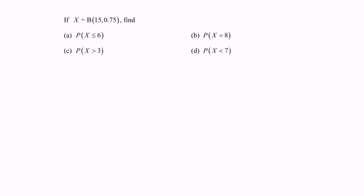We need to find the probabilities for several situations. Based on the binomial distribution table, the maximum probability value provided is up to 0.5. Since our probability of success is 0.75, we use the opposite situation: we define Y as binomially distributed with n equal to 15, where the probability of failure equals 0.25. This means we modify the situation accordingly.